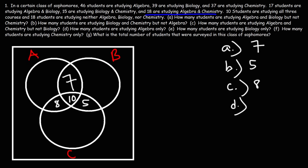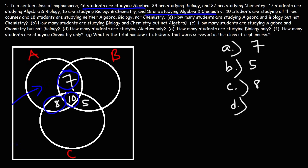Part D: how many students are studying algebra only? The algebra circle represents all 46 students studying algebra. This inner part represents students studying algebra but not biology and not chemistry. To find that, we take 46 and subtract the three overlapping values: 46 minus 7, minus 8, minus 10 gives us 21. So 21 students are studying algebra only.